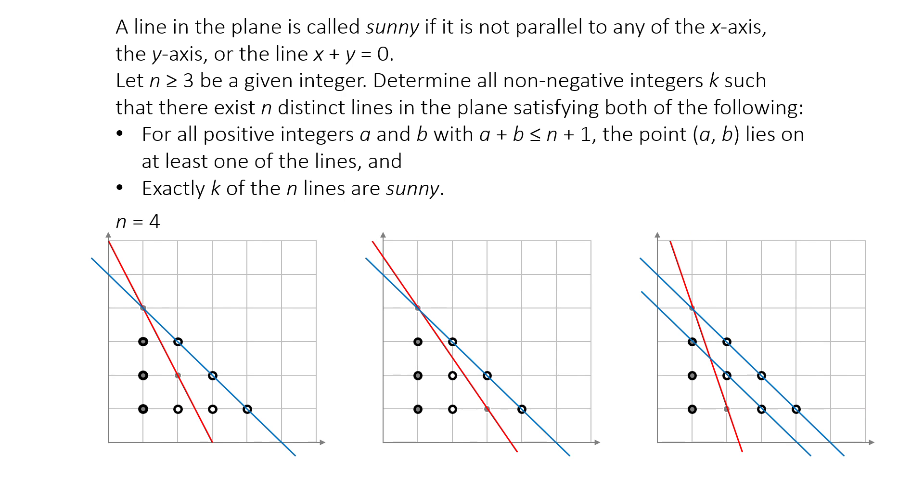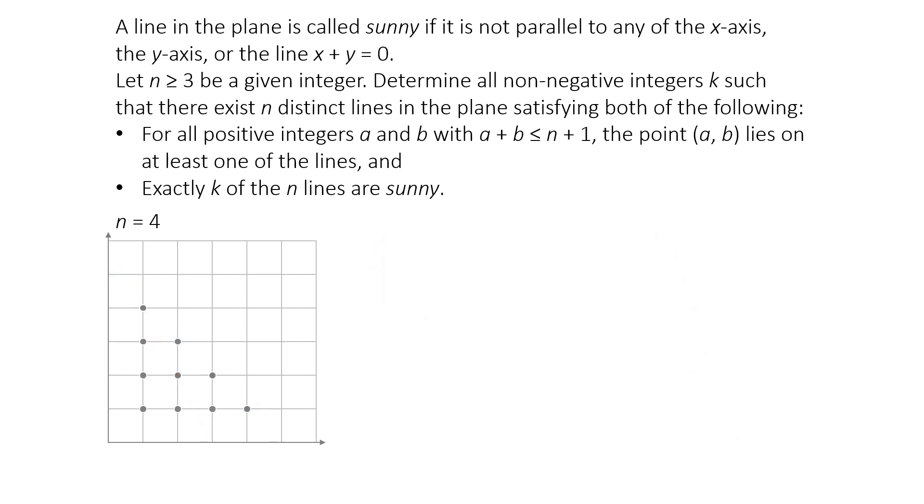To cover all the points, we're forced to draw lines that are non-sunny. The same kind of logic applies if we try to avoid using the first row y equals 1, or the diagonal line x plus y equals 5. So we must use one of the three lines. If we include one of these non-sunny lines, like x equals 1, the leftover points that still need to be covered looks exactly like the n equals 3 cases.